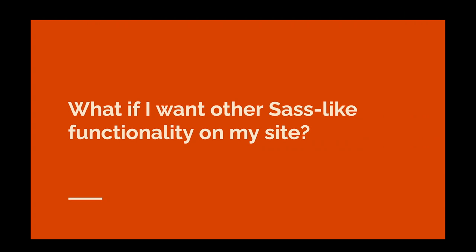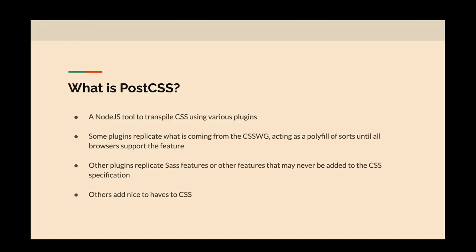That covers the basics of what's in CSS that can replace Sass. Now, what if you want other Sass-like functionality that might not be in CSS yet? This is where I'll talk about PostCSS. If you don't know what PostCSS is, it's a Node.js tool that transpiles your CSS using a bunch of different plugins. Some replicate Sass functionality that CSS is working on but isn't yet a specification. Others replicate existing Sass features or features that may never be added to CSS. And some are just nice-to-haves.